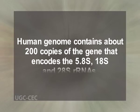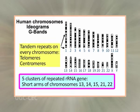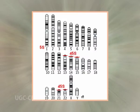To meet the need for transcription of large numbers of rRNA molecules, all cells contain multiple copies of the rRNA genes. The human genome contains about 200 copies of the gene encoding the 5.8S, 18S, and 28S rRNAs, and approximately 2000 copies of the gene encoding 5S rRNA. The genes for 5.8S, 18S, and 28S rRNAs are clustered in tandem arrays on five different chromosomes: chromosomes 13, 14, 15, 21, and 22. The 5S rRNA genes are present in a single tandem array on chromosome 1.